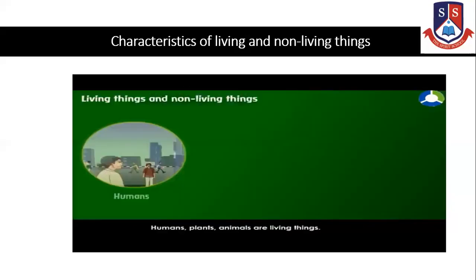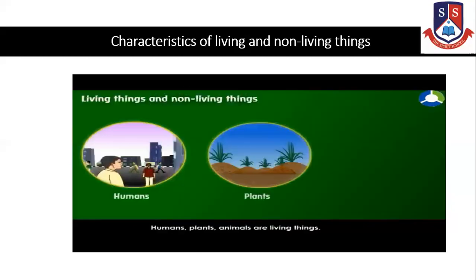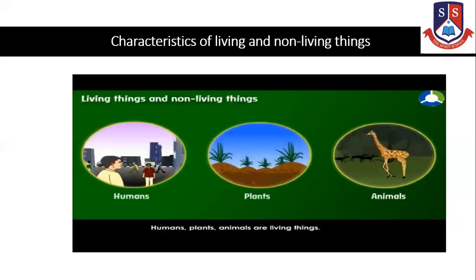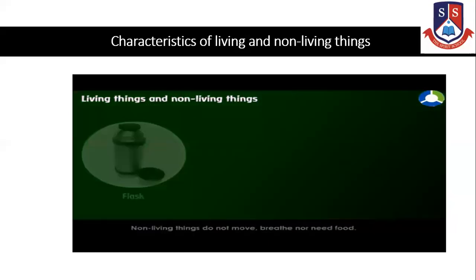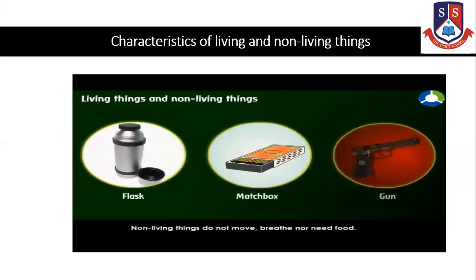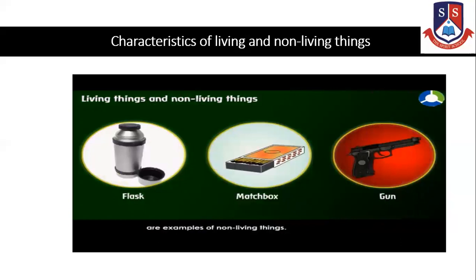Humans, plants, and animals are living things. Non-living things do not move or live. A flask, a matchbox and a gun are examples of non-living things.